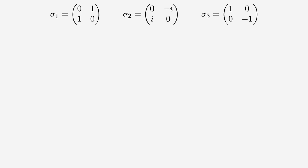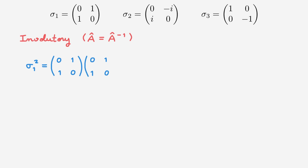The next property we will investigate is the fact that the Pauli matrices are involutory, which means that an operator or matrix A is equal to its own inverse. To show this explicitly we will demonstrate that multiplying a Pauli matrix by itself yields the identity. Taking sigma 1 squared first, we write it as sigma 1 times sigma 1, and applying the usual rules of matrix multiplication we get 1, 0, 0, 1 — the 2x2 identity matrix. This confirms that the inverse of sigma 1 is itself.